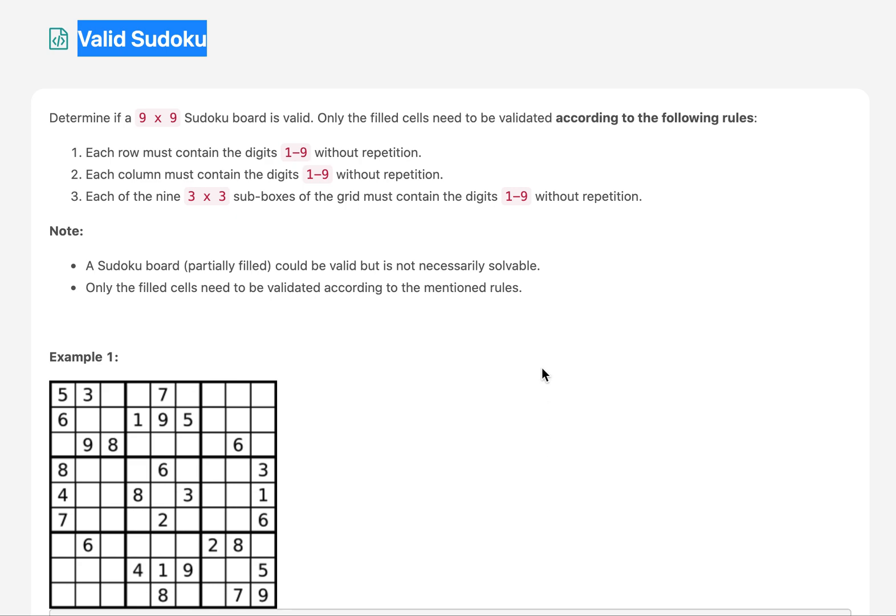There are few rules specified for this validation. The question is not telling us whether the Sudoku board is solvable, we just want to tell whether it's a valid Sudoku board or not. The rules are: each row must contain 1 to 9 elements without repetition, each column must contain the digits 1 to 9 without repetition.